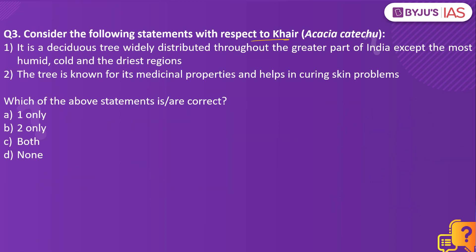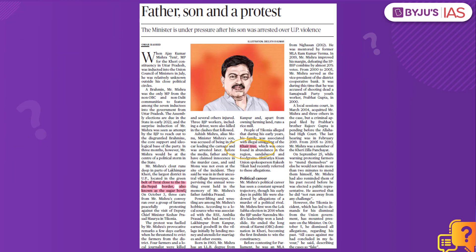Consider the following statements with respect to care tree. It is a deciduous tree widely distributed throughout the greater extent of India except the most humid, cold and driest regions. The tree is known for its medicinal properties and helps in curing skin problems. The answer is both statements are correct. This article makes a mention of the care tree. These trees are found across India except in regions with most humid, cold or very dry climatic conditions, including tropical moist deciduous forest, tropical dry forest and tropical thorn forest. The tree is also known for its medicinal properties — it can be used for curing skin problems, neck and gum problems, diarrhea, lung infections, and so forth.